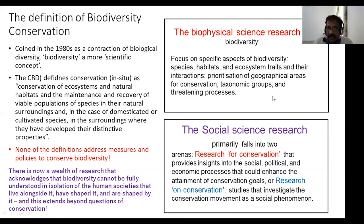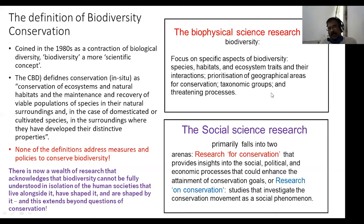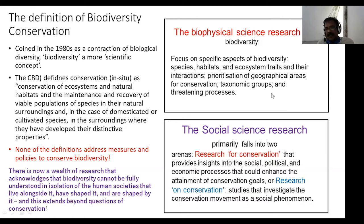There is now a wealth of research acknowledging that biodiversity cannot be fully understood in isolation from the human societies that live alongside it, have shaped it, and are shaped by it. Ecological science focuses on species, habitats, and ecosystems. Social science research primarily falls into two arenas: research for conservation — providing insights into social, political, and economic processes that could enhance biodiversity goals — and research on conservation as a social phenomenon.